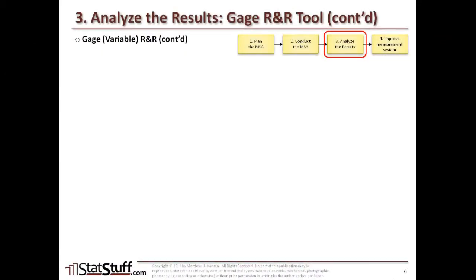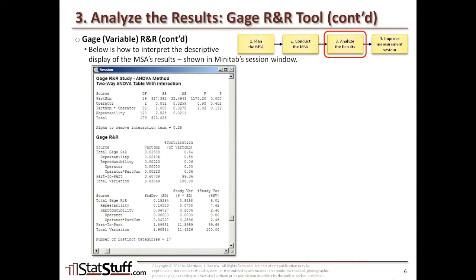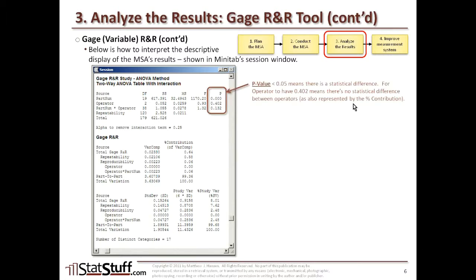Now let's focus on how to interpret the Minitab results displayed in the session window. Here's an example of what the session window would look like from this particular study. The first thing you're going to look for is the p-value.